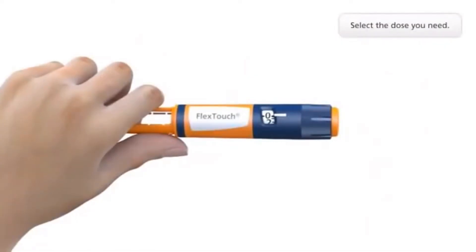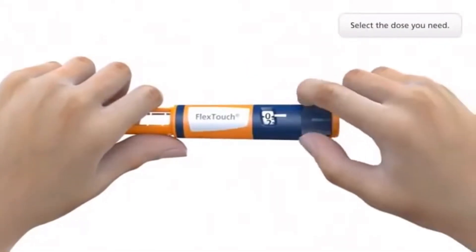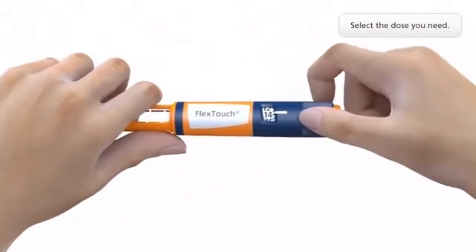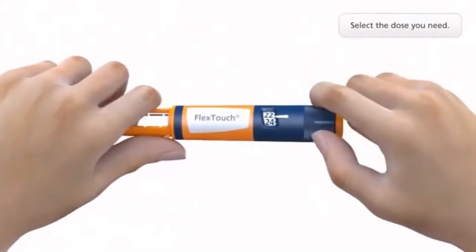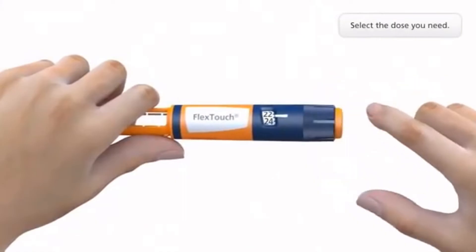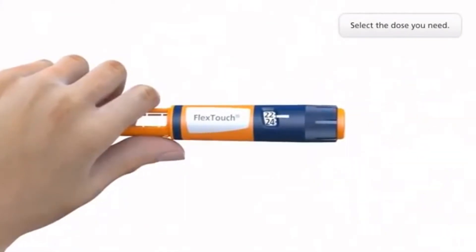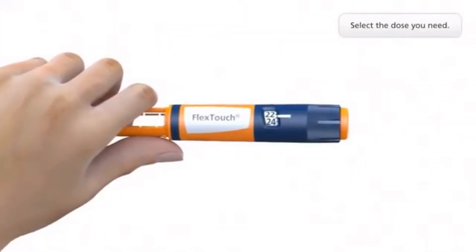Make sure that the dose selector is set at zero and select the number of units you need to inject. Adjust the dose by dialing up or down if necessary. FlexTouch is easy to handle as this is the only pre-filled insulin pen with no push button extension.